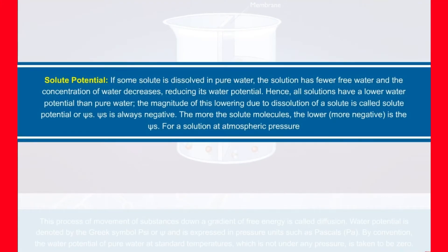Solute Potential: If some solute is dissolved in pure water, the solution has fewer free water and the concentration of water decreases, reducing its water potential. Hence, all solutions have a lower water potential than pure water. The magnitude of this lowering due to dissolution of a solute is called solute potential or ψs. ψs is always negative.